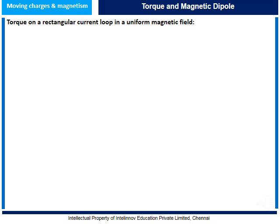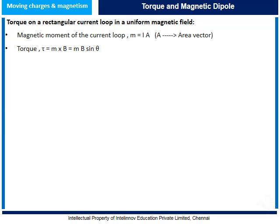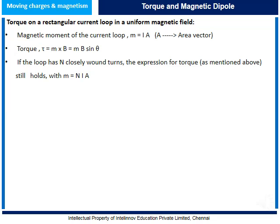Let us understand torque on a rectangular current loop in a uniform magnetic field. The magnetic moment in a current loop is given by m = iA, where A is the area vector. The torque is given by the cross product of magnetic moment and magnetic field, that is m × B, which equals mB sin θ. If the loop has n turns, the expression of torque still holds with m = n × i × A.